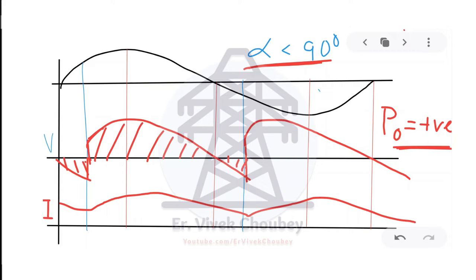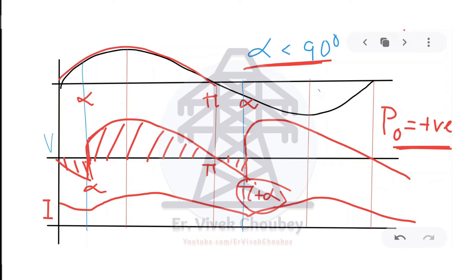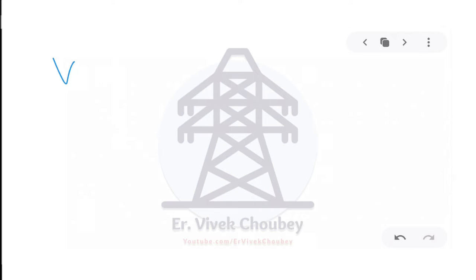Mathematically, for a single-phase fully controlled converter, the firing angle is alpha, the cycle runs from alpha to pi plus alpha, following the waveform Vm·sin(ωt). The average output voltage is: V_average = (1/π) · ∫[alpha to π+alpha] Vm·sin(ωt) d(ωt).